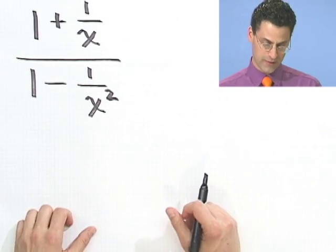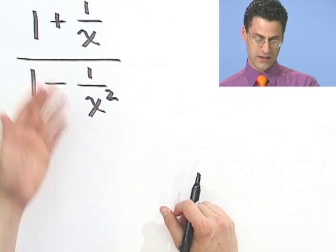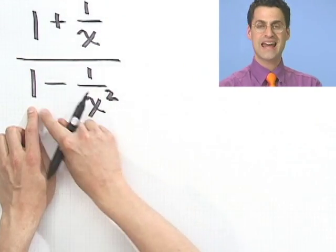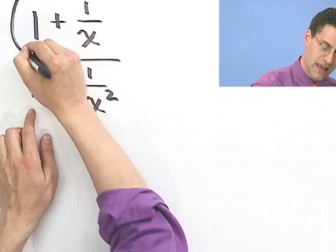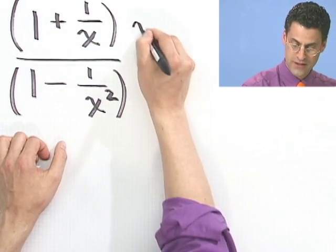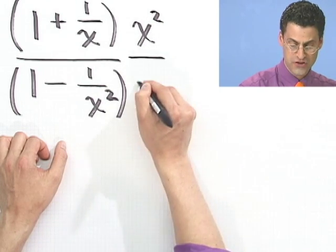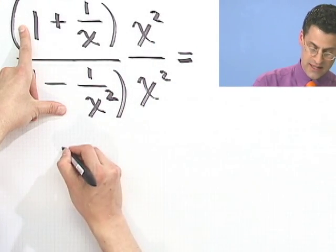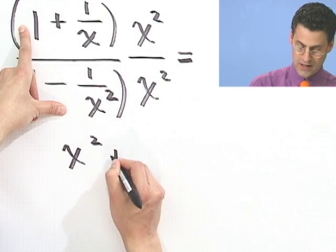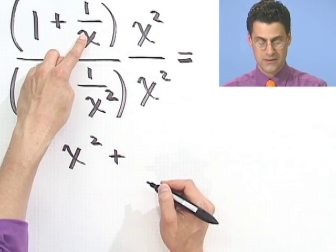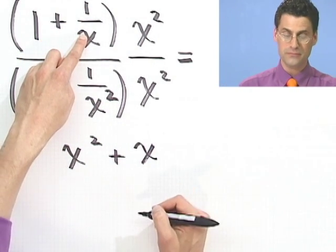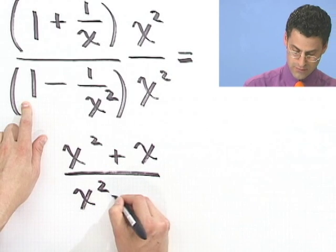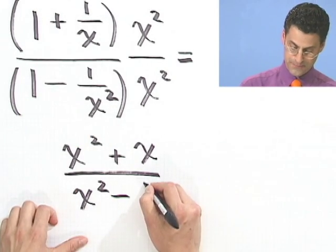But let's think about this least common multiple approach. What's the smallest thing required to kill off all the denominators? All I need on top is an x, but on the bottom I actually need an x squared. So I'm going to multiply top and bottom by x squared. If I do that — x squared over x squared, that's just 1 — when I distribute I see x squared plus, and distributing x squared over x, that's just x. On the bottom I'm left with x squared minus 1, because they cancel.